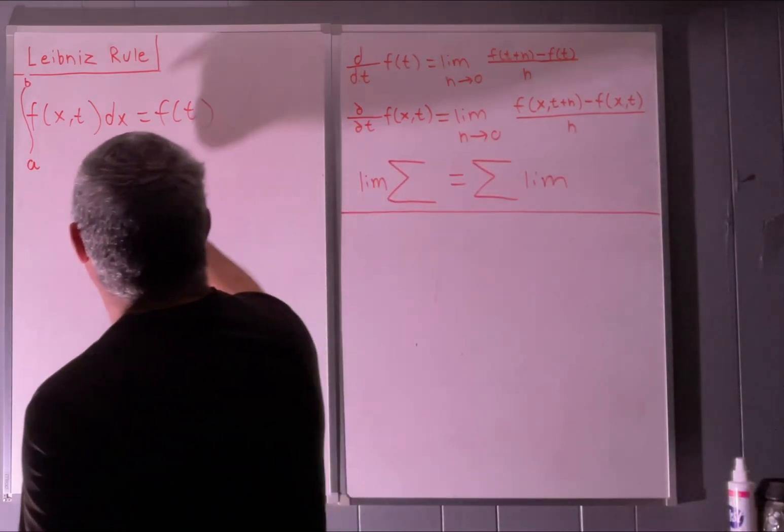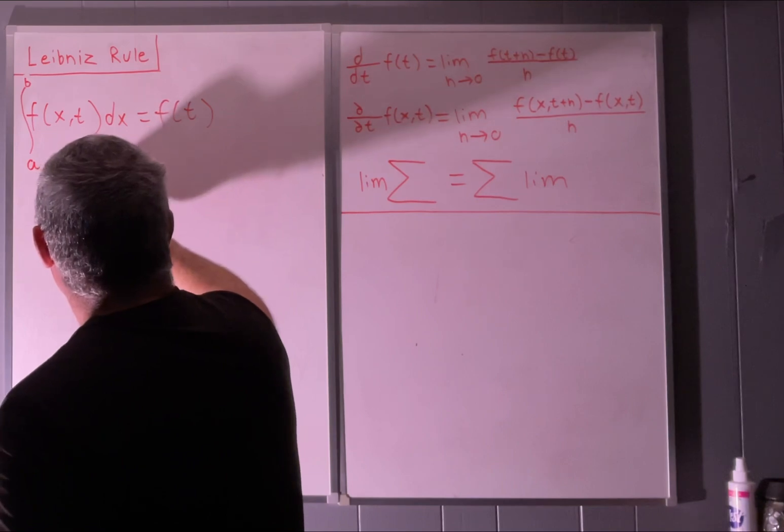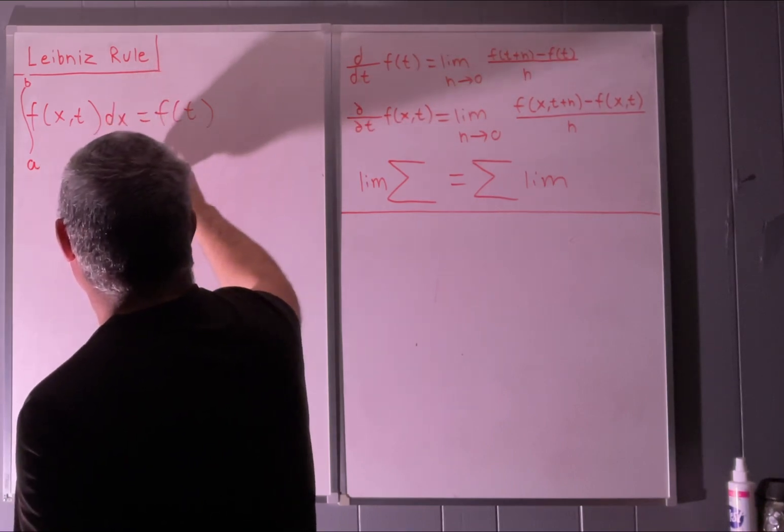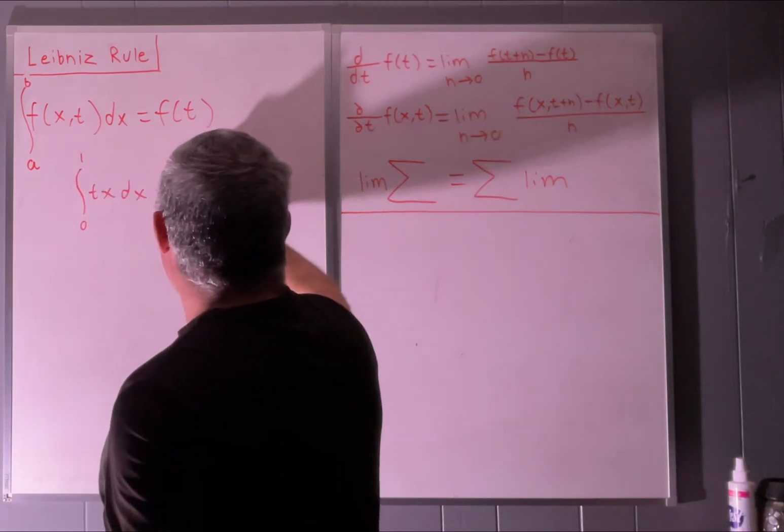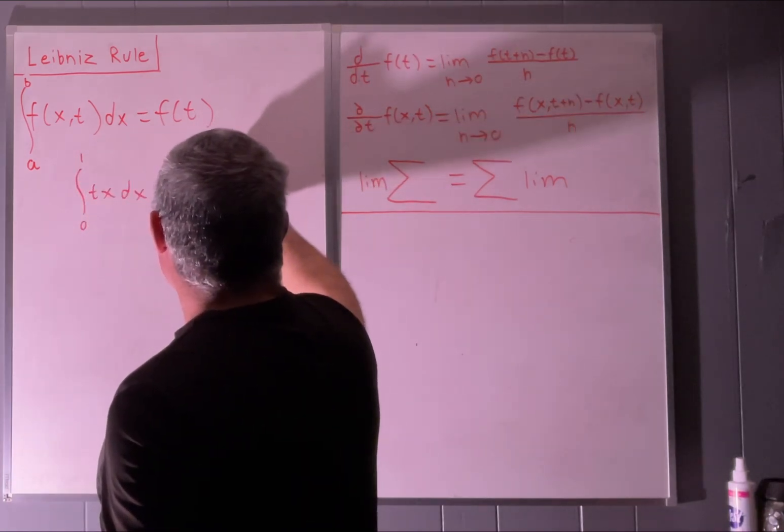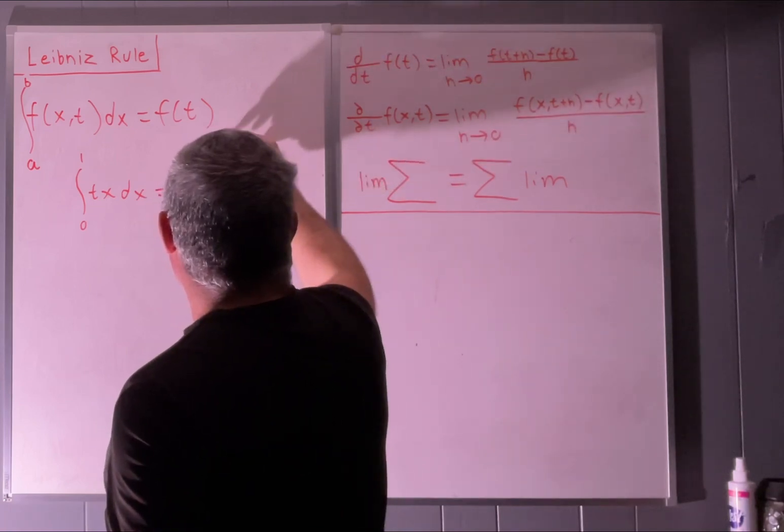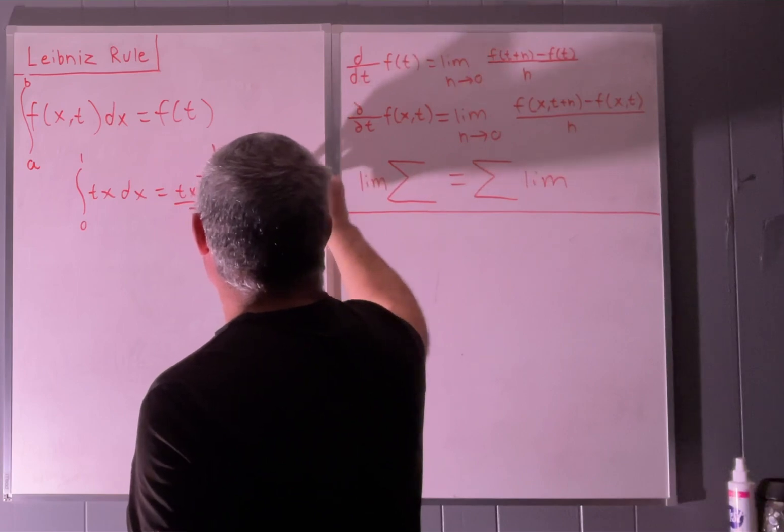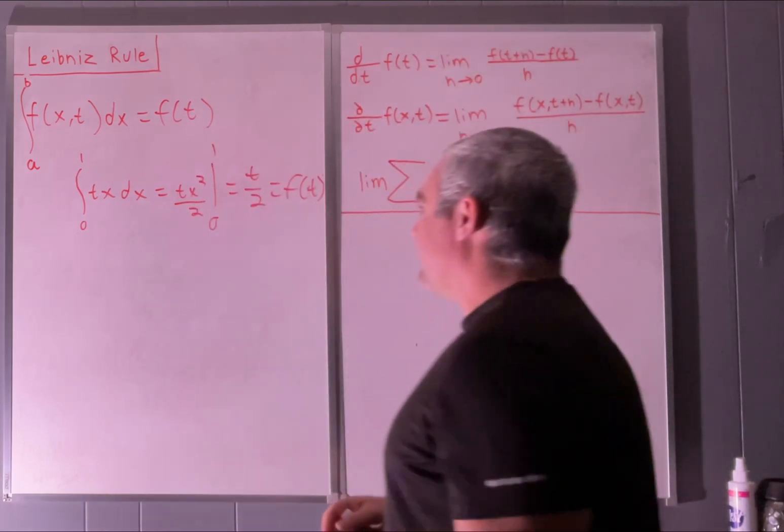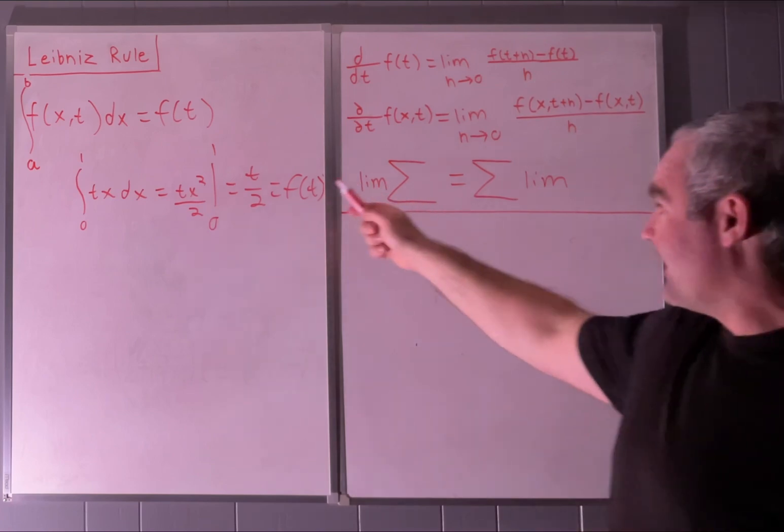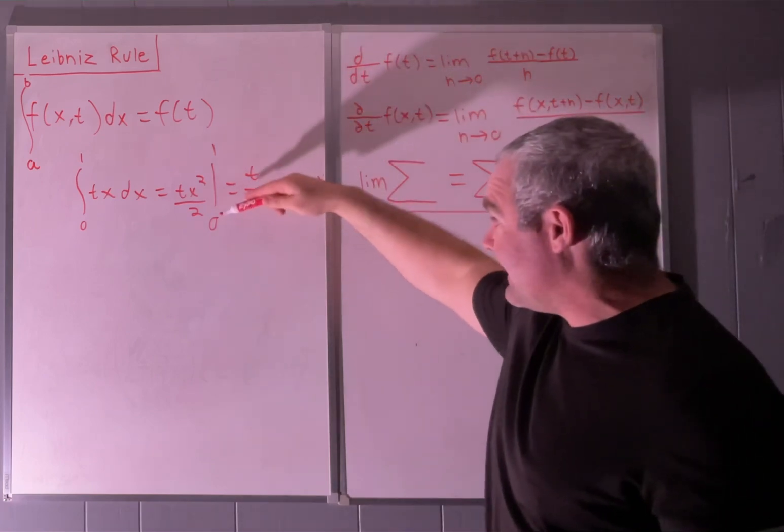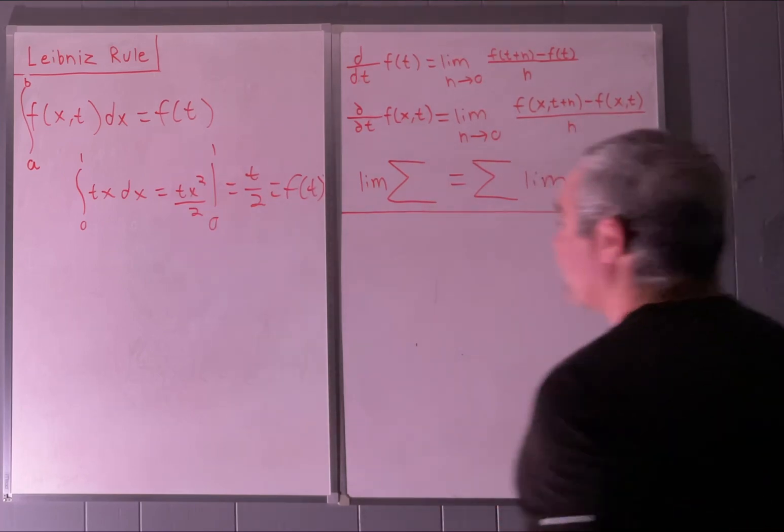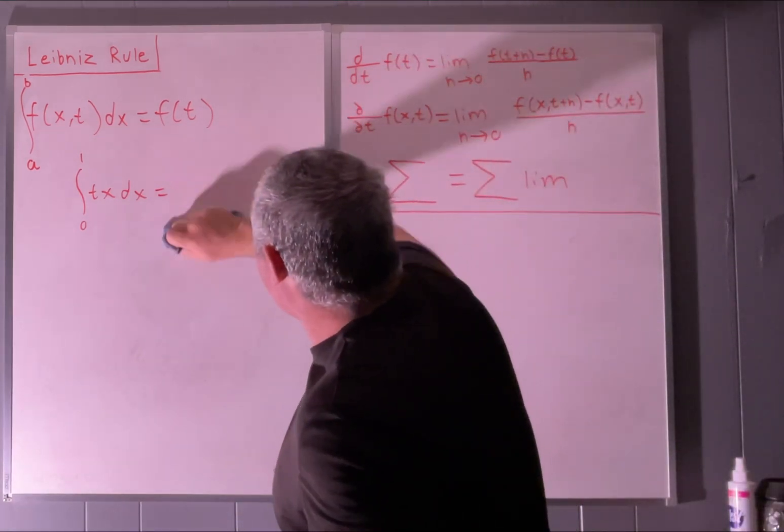I'll give a quick example. Let's say that we wanted to take the integral from 0 to 1 of tx dx. Well, that would be equal to tx squared over 2 from 0 to 1, which would equal t over 2, which is a function of t. And that will work every time, because you end up plugging in values for your x, leaving you with nothing but t's. So that's why that would be true.